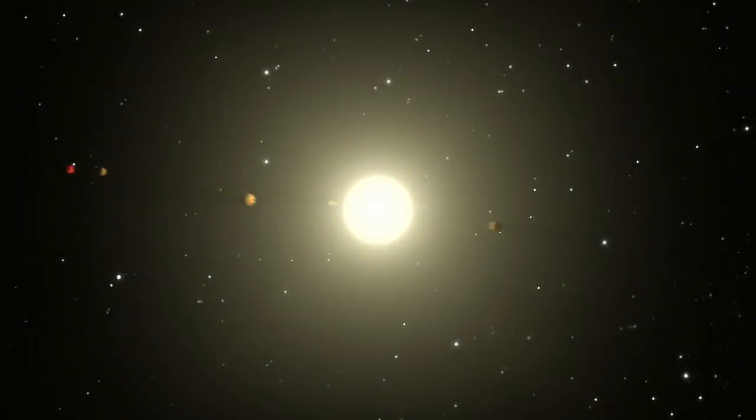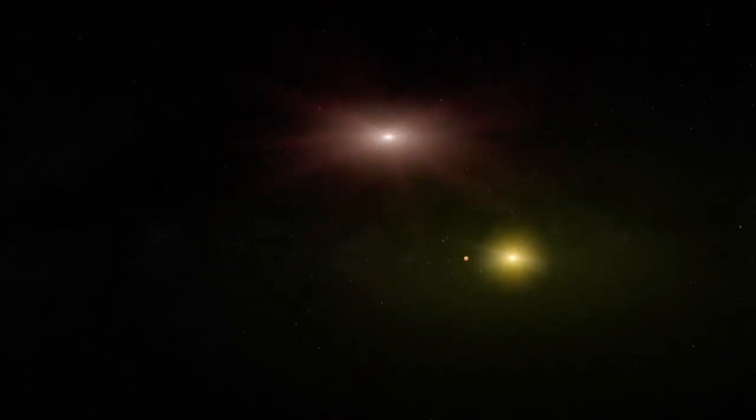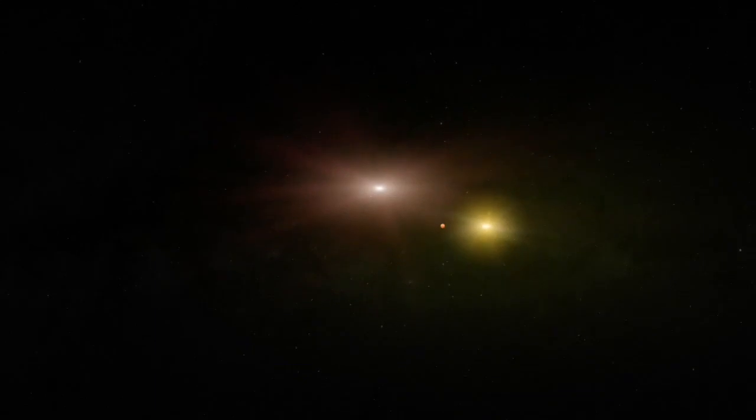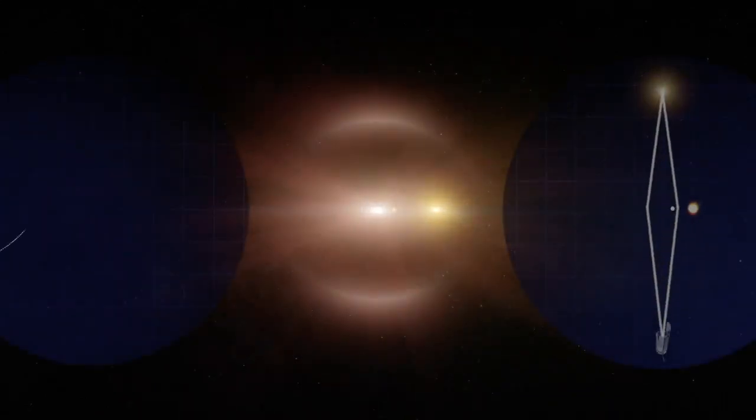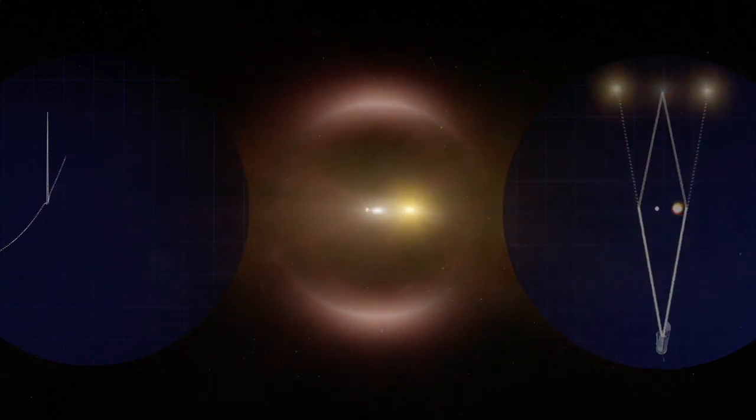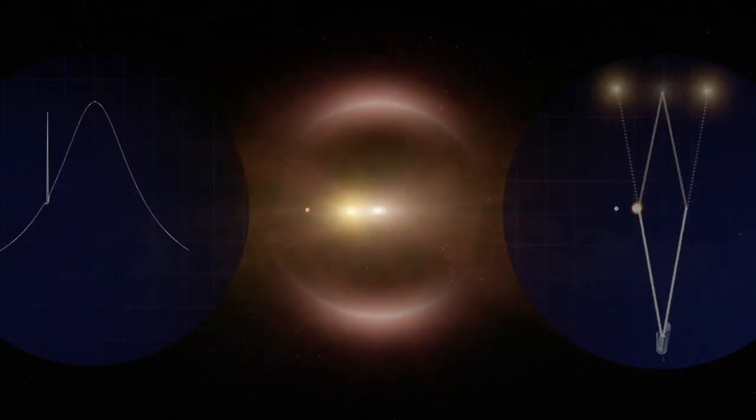The particular thing I'm interested in using WFIRST for is to actually do a statistical census of planetary systems in our galaxy. And what we're looking for is gravitational microlensing events. These are cases when another star passes in front of our line of sight to a background star, and it makes that background star get a little bit brighter due to the gravity of that foreground star. And that allows us to find planets.